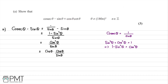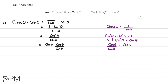The next trig identity we can use is that cos of theta divided by sine of theta equals cot of theta. We have exactly that expression here, so we substitute it in. This gives us cos of theta multiplied by cot of theta, which is the required answer. We've therefore shown that cosec theta minus sine theta is equivalent to cos theta multiplied by cot theta, as required.